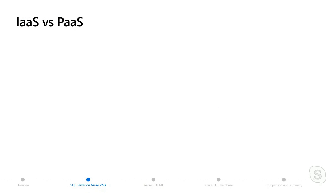We wanted to take the opportunity to break down the differences between IaaS and PaaS. One big difference is that in IaaS — in this case SQL Server on an Azure Virtual Machine — there are a lot of things that you can configure yourself, just like in SQL Server. But with PaaS, there's a lot of automation and help that we can provide.